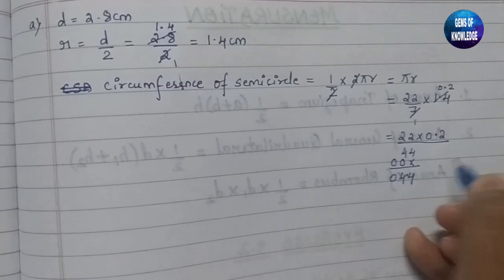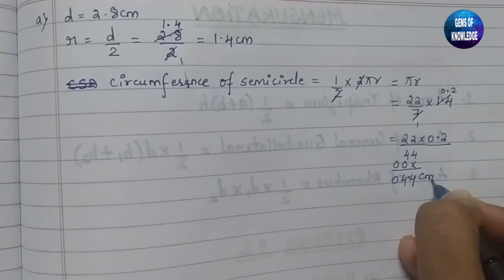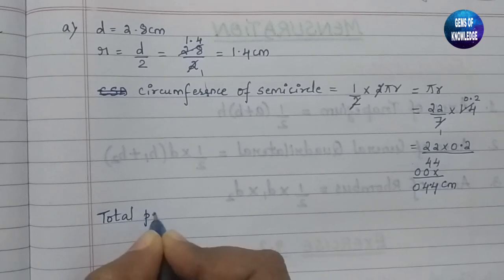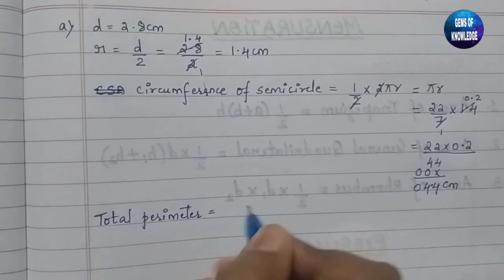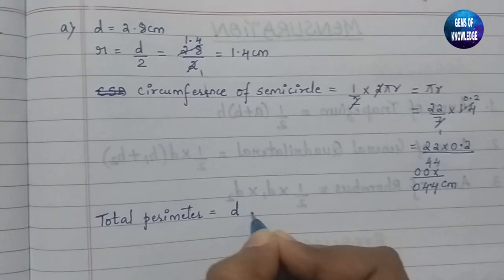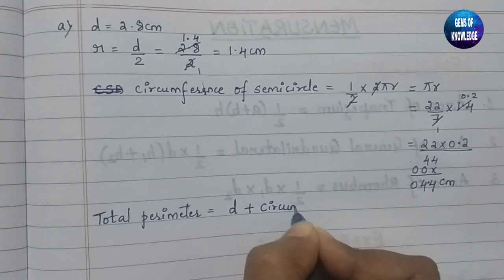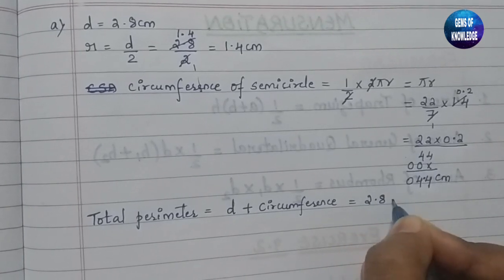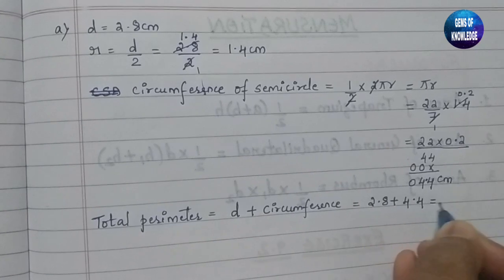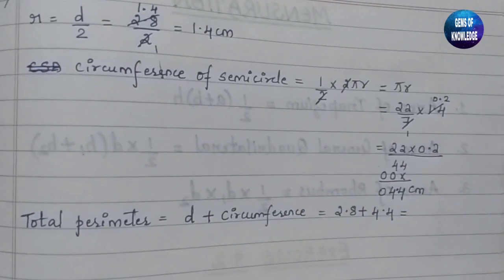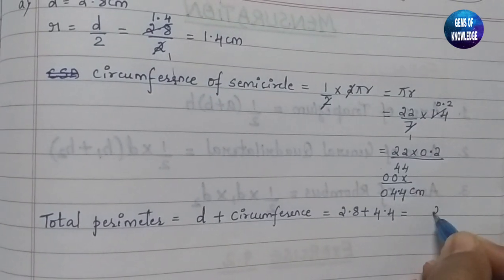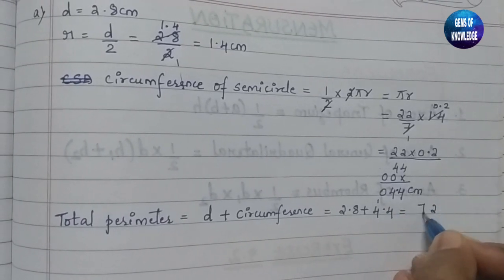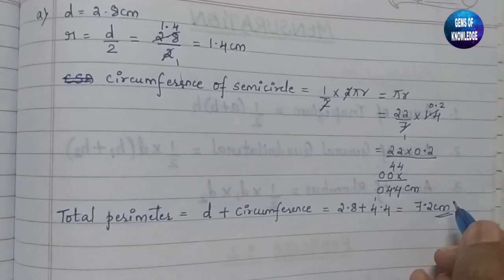The circumference of the semicircle equals 4.4 cm. The total perimeter for figure A equals the diameter plus the circumference: 2.8 plus 4.4. Adding these gives 7.2 centimetres. This is the perimeter for figure A.